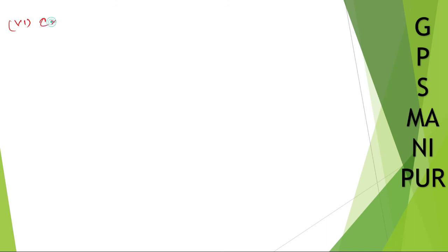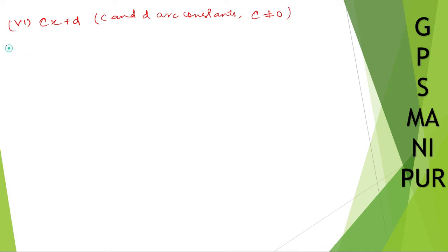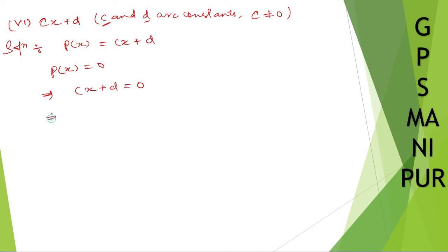Roman number six: p(x) = cx + d, where c and d are constants and c ≠ 0. Setting cx + d = 0, we get cx = -d, so x = -d/c. Since c is a non-zero number, that's fine. So x = -d/c is the answer.